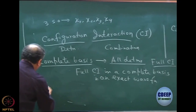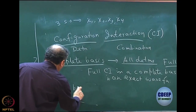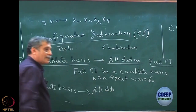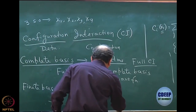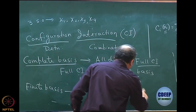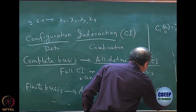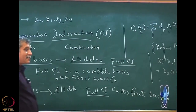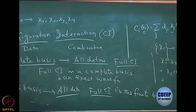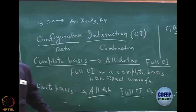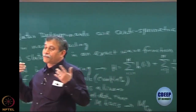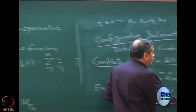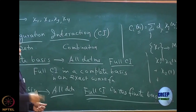What is normally practiced is a finite basis. Within a finite basis, you can take all determinants, and this is still called full CI in that finite basis. The name full CI just means that all determinants have been taken. As long as you take all determinants in a given basis, we call it full CI — because we will never actually reach a complete basis. Whenever you call full CI, you must specify the basis.